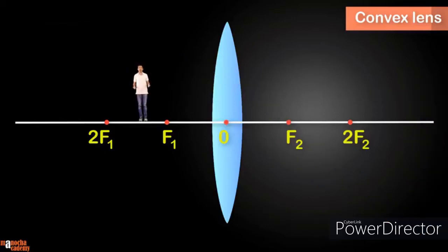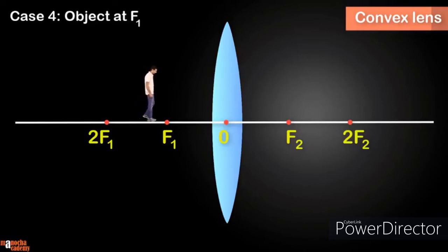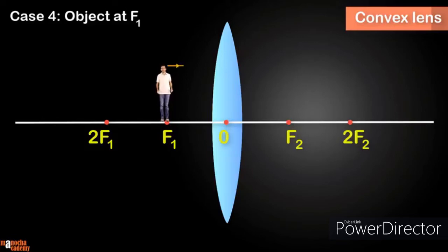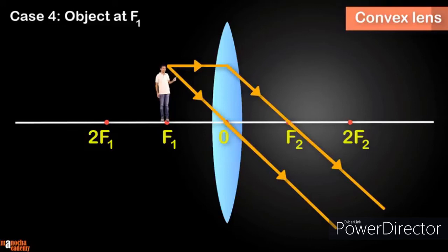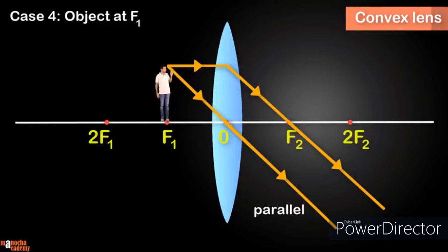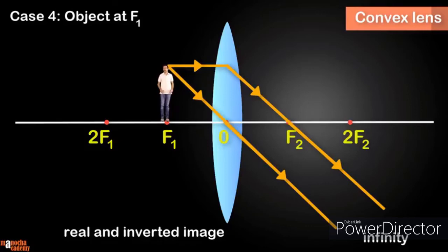Next, the object is placed at the focus of the convex lens. This is an interesting case because the refracted rays are parallel — they never meet. The image is therefore formed at infinity. The image is real and inverted, and it's highly magnified.